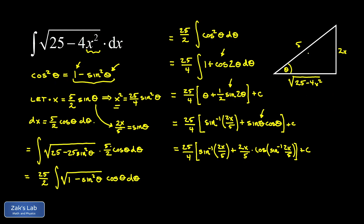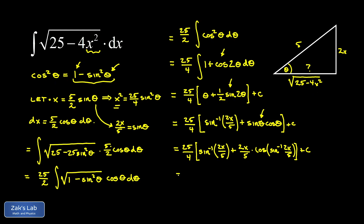If you're not comfortable with guess and check, you can name the adjacent side and write down the Pythagorean theorem, then solve for it: subtract 4x squared from both sides and take the square root, giving the same answer — square root of 25 minus 4x squared. So now we know the cosine of the angle whose sine is 2x over 5, and we substitute that in.